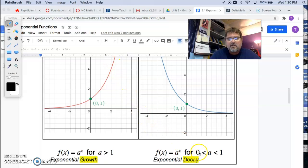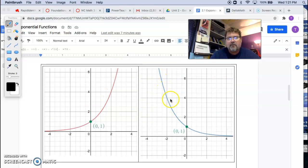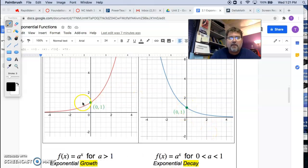If a lives between 0 and 1, not including either side, 0 or 1, you get what's called a decay. And that's this general shape that you'll get. And I put on here the y-intercept is at (0, 1).